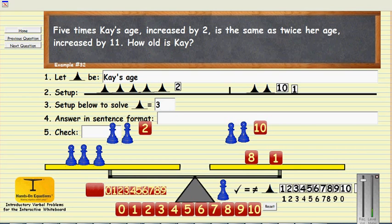We need to write the answer in sentence format. Since pawn was k's age, we can say k is three years old.